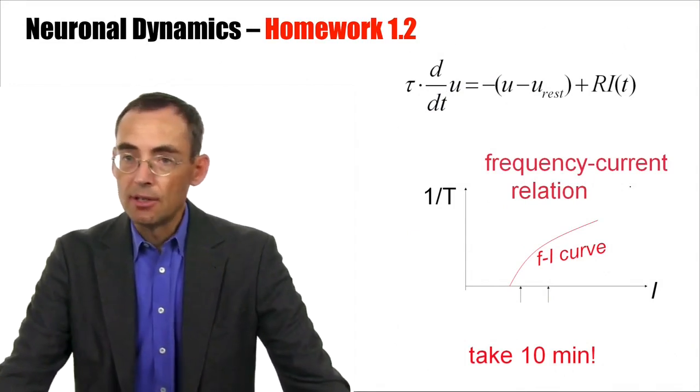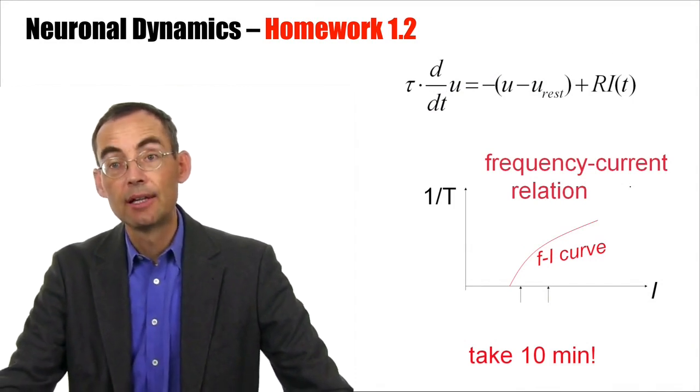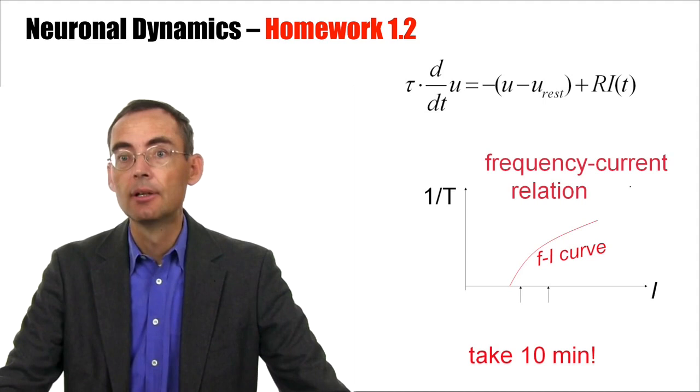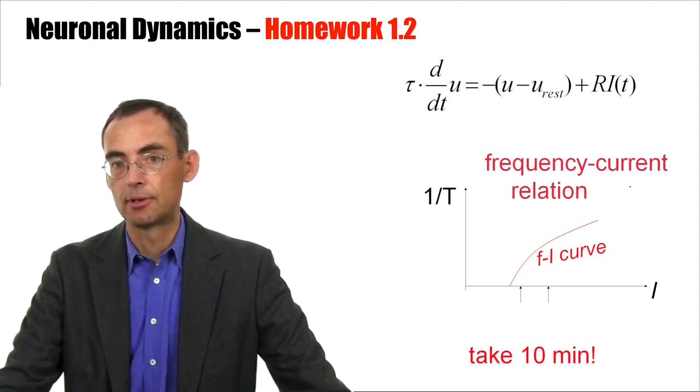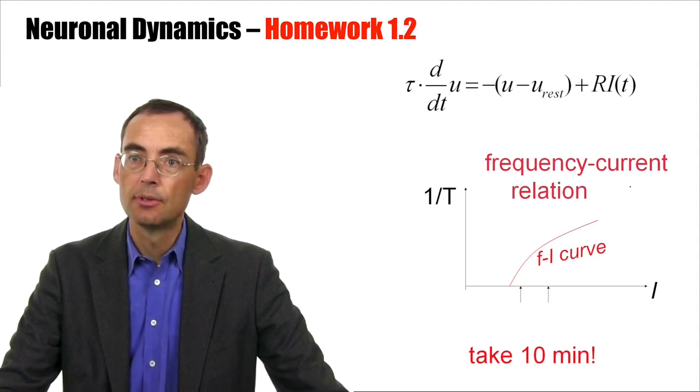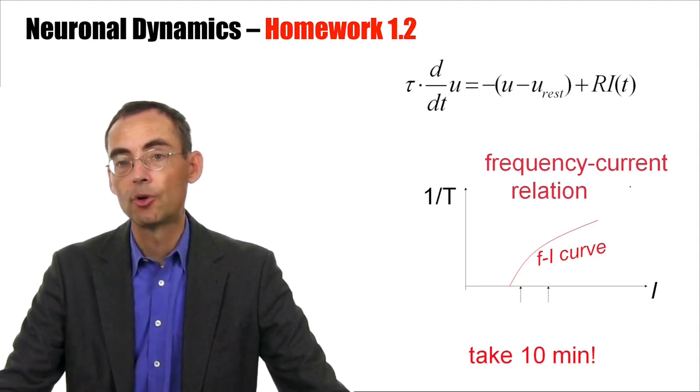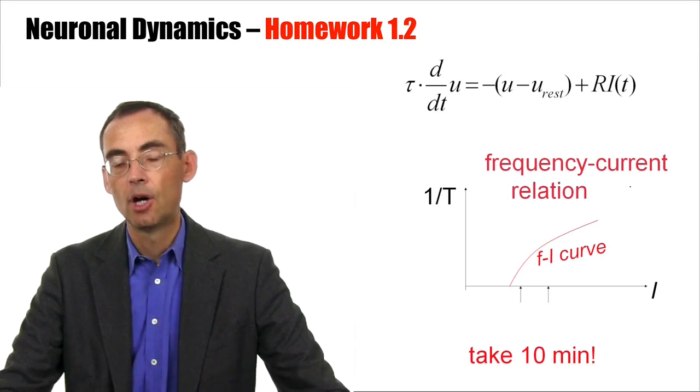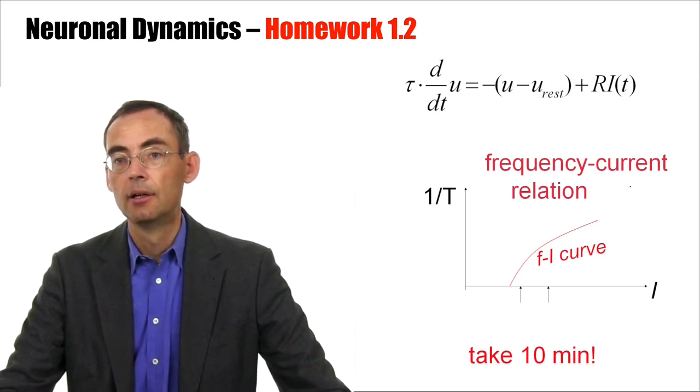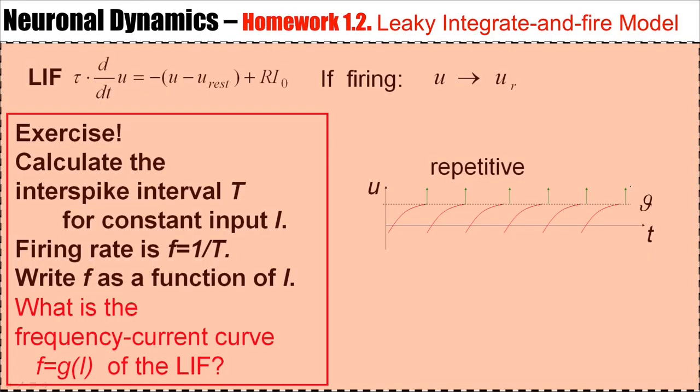So we have seen in part 1.2 that for a passive membrane, we can calculate mathematically the response to a step current. We can now use this solution to calculate the period of firing, or the frequency of firing, of a periodically firing leaky integrate-and-fire model. And this is what I would like you to do next.